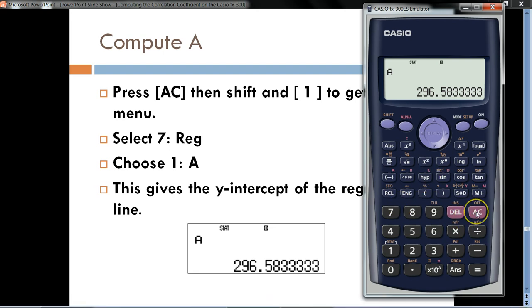And then, we want to go ahead and find the slope of it now. Now, let's think for a minute. We saw the line going downhill because the number of TSS cases were decreasing over time. So, we would expect the slope to be a negative number, wouldn't we? So, let's go ahead and find out. We'll go ahead and hit all clear again. And then, hit Shift and number 1 to get the stat output menu. And then, number 7 for regression. And then, we'll hit number 2 for B.